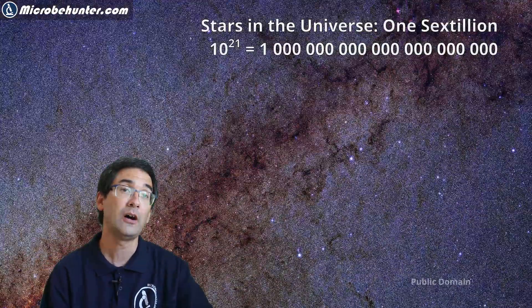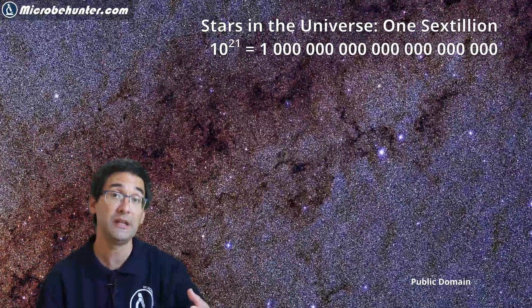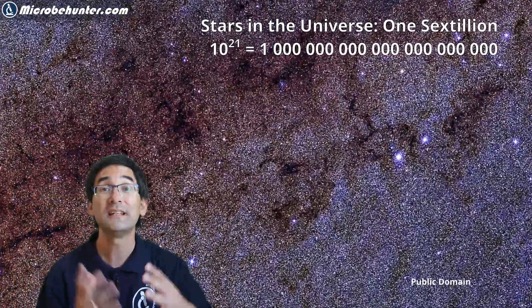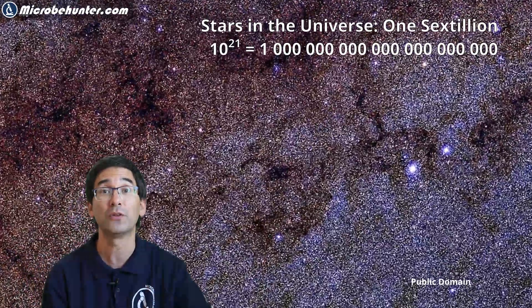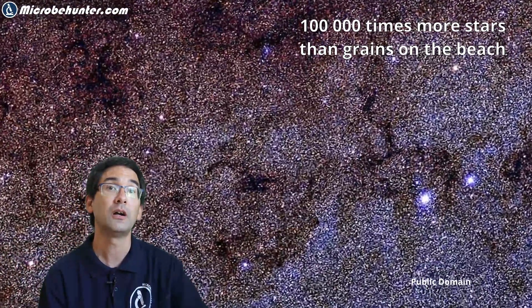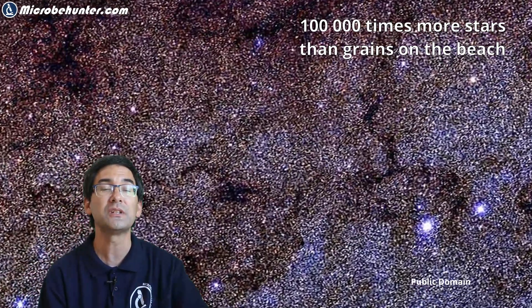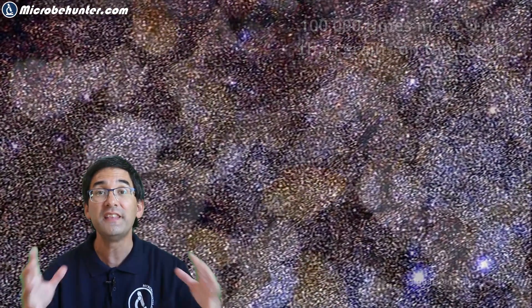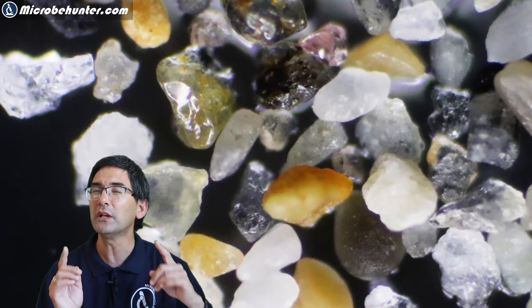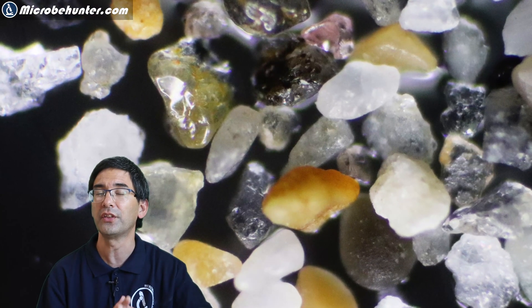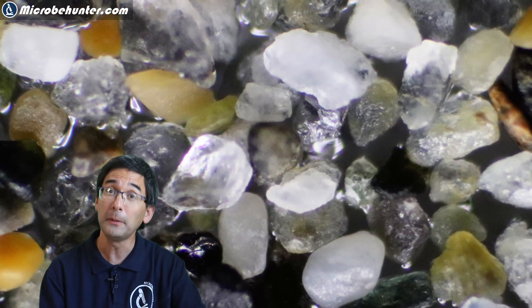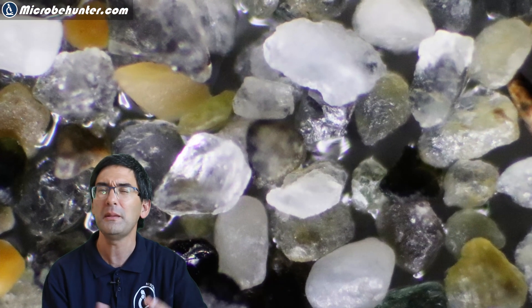Now however the stars in the universe are still much more. 10 to the power of 21, that's approximately the estimated number of stars in the universe and this means that there are approximately a hundred thousand times more stars in the universe than sand on this beach. If you now take all of the sand on the earth, not just this beach but maybe also the deserts and all other beaches and maybe the sand that you find in the ocean, then probably we have more sand or maybe the same amount of sand on earth as we have stars in the universe.